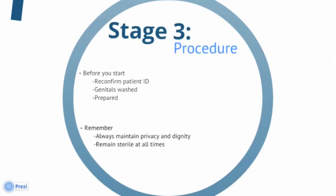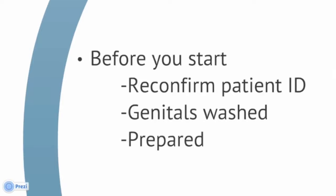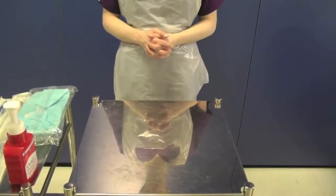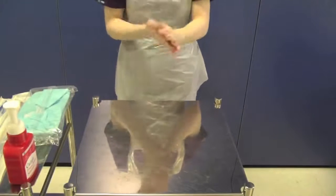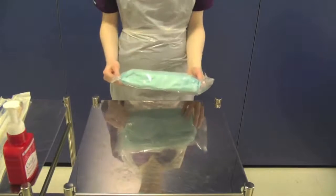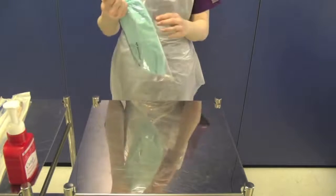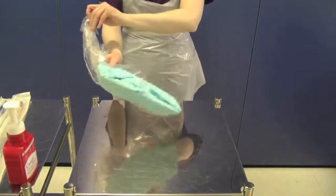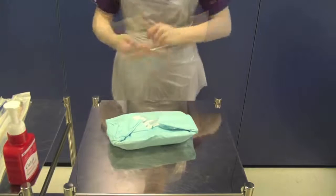Stage 3 involves performing the procedure itself. This video will demonstrate how to gather the equipment seen in stage 2 and correctly perform catheterisation. Before you start, reconfirm patient ID, ensure that they have washed their genitals, and that you and the patient are prepared. Once you have cleaned your trolley, don an apron and decontaminate your hands using the WHO seven-stage hand washing technique. This must be used every time you decontaminate your hands. Take your catheter pack and check that it is in date. Open the pack onto the trolley without touching the contents. You must decontaminate your hands as you have been touching outer packaging.